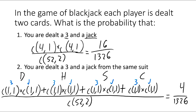We actually could have gotten that without all those combinations. To get a three and a jack from the same suit, there are only four ways total: three and jack of diamonds, hearts, spades, or clubs. Those are the only four options, so we could have simply counted them. But using combinations works as well.